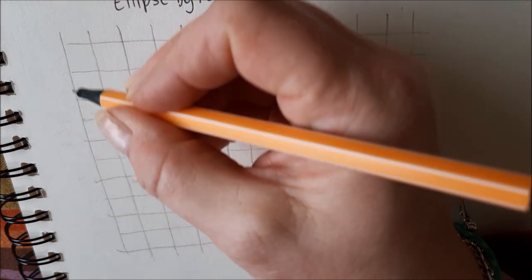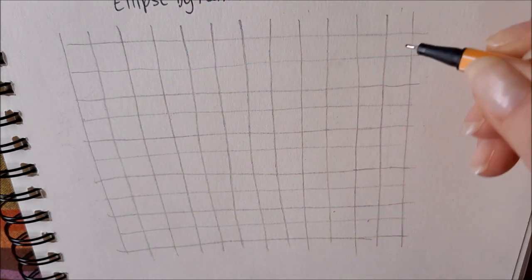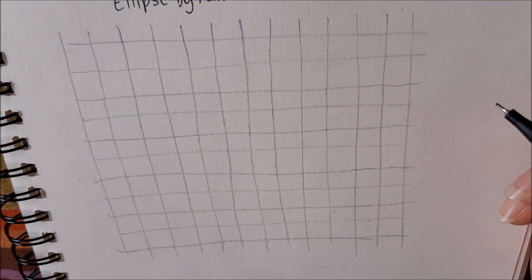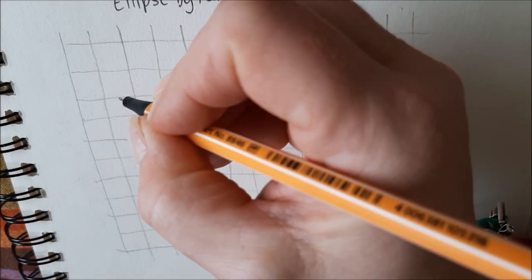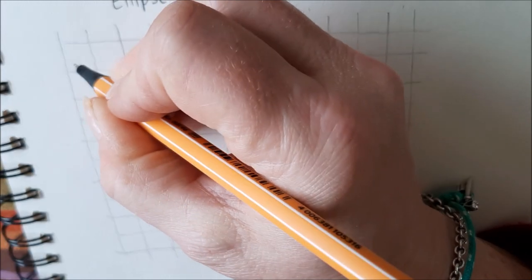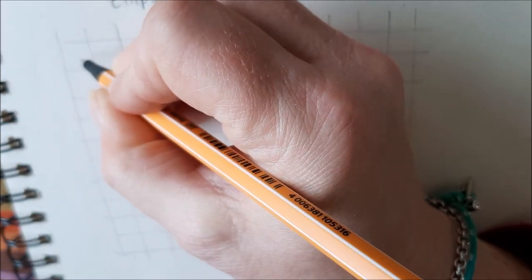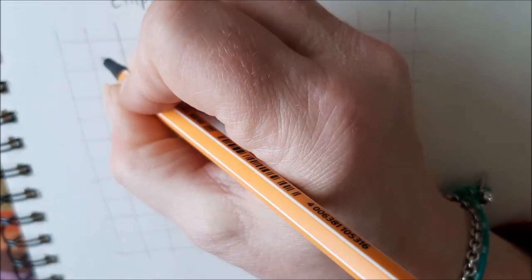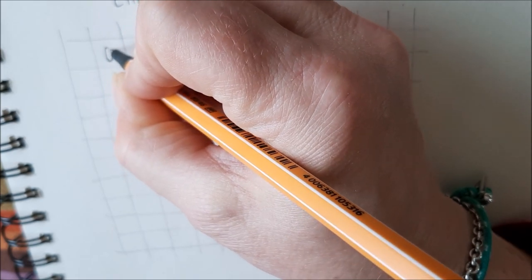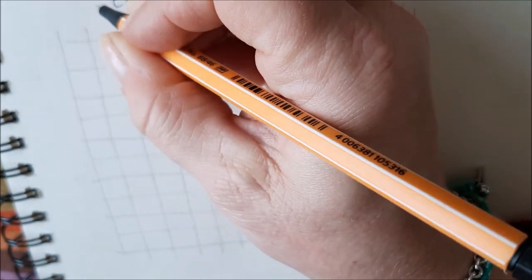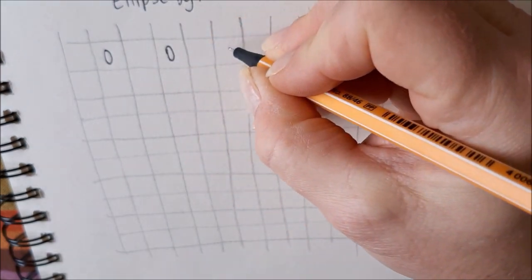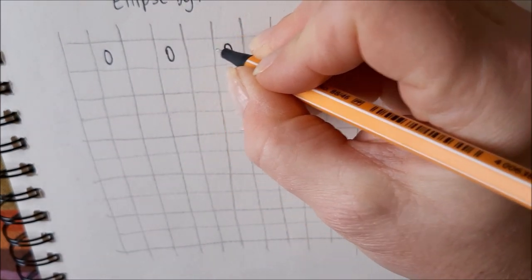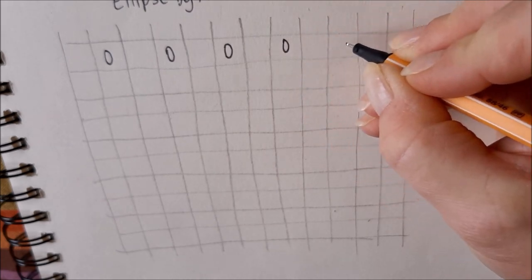It starts off with a grid in pencil and the first step is to draw ovals. We skip this first block, this first square, and we draw an oval which stands up. Skip this one, draw another, skip this one and so on.